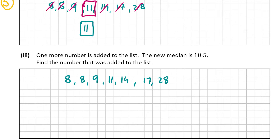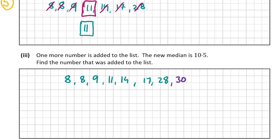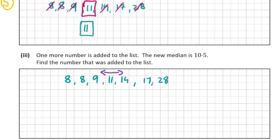When you have two numbers in the middle of a list, you add them both together and divide by 2 to get the median. We don't know what the new number is or where it is in the list. If the new number is less than 9, the two middle numbers would be 9 and 11. If the new number added is greater than 14, the two middle numbers would be 11 and 14. If the new number is between 9 and 14, then the new number plus 11 divided by 2 will equal 10.5.